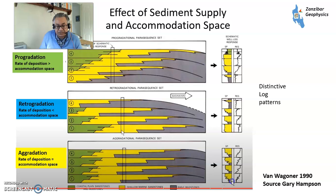And these are what the signatures look like on logs — these are individual units, individual sequences with sand at the top. These are distinctive log patterns: this is when you have a retrogradational system, this is where you have a progradational system. Looking at log signatures helps you try to understand where you are.